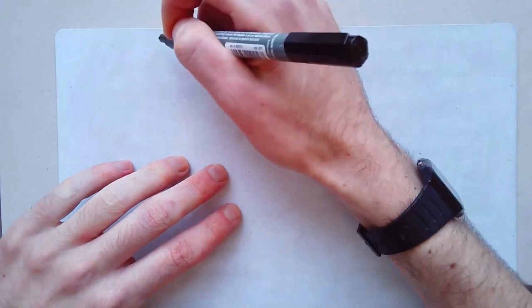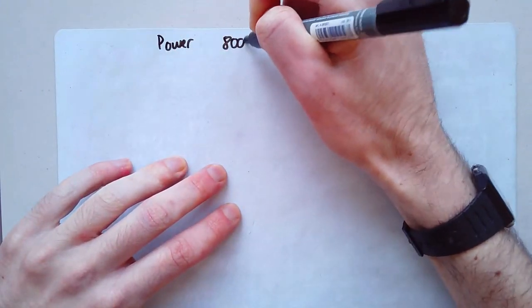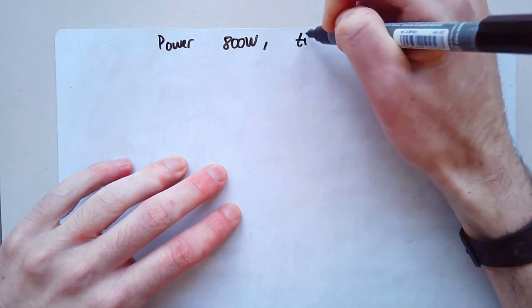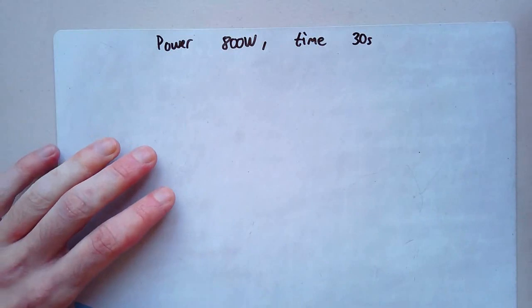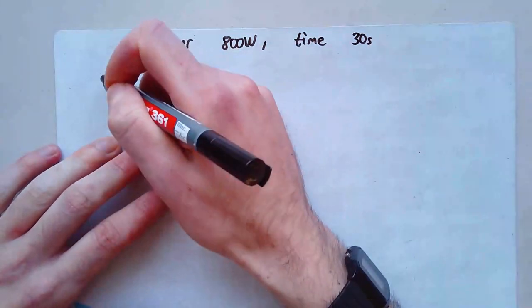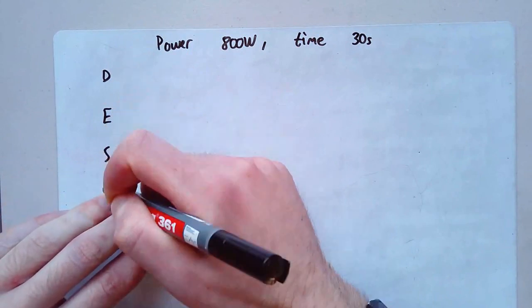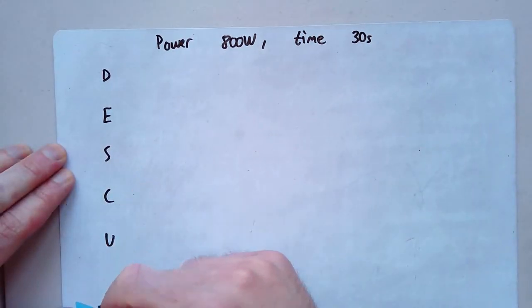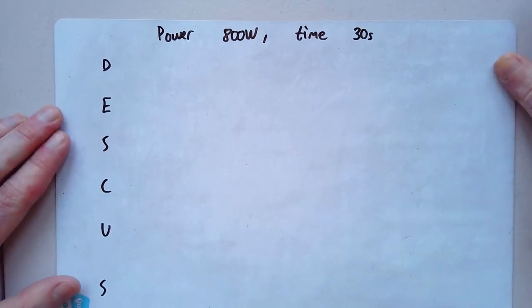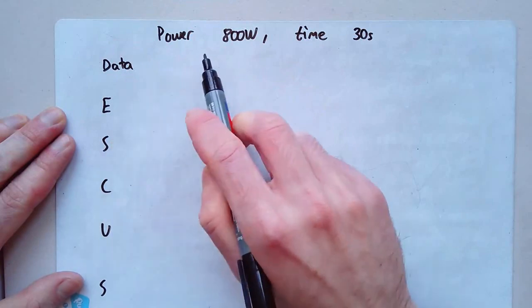Now, if your question gives you say a power of 800 watts and a time of 30 seconds, this is really easy to solve. Always, always, always, I encourage my students to write down DESCU and then S on the side there.